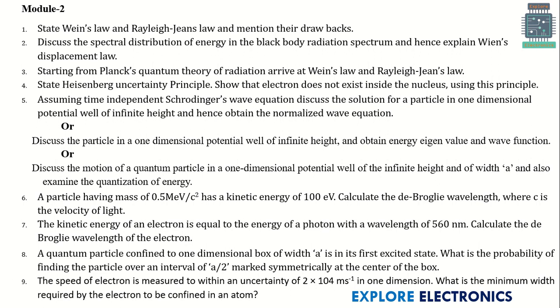And coming to module 2, here are the important questions. Here you can see some Wien's laws and Rayleigh-Jeans law and their drawbacks are important here. Discussion on spectral distribution of energy in black body radiation spectrum and Planck's quantum theory of radiation about Wien's law and Rayleigh-Jeans law. So these are again repeatedly asked questions in the examinations and also you can see these questions in model paper module question papers 1 and 2 also.